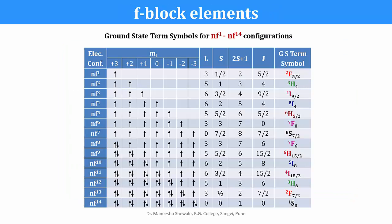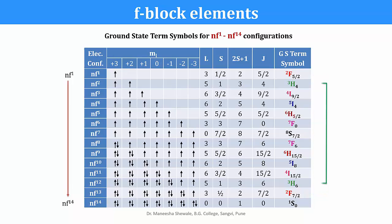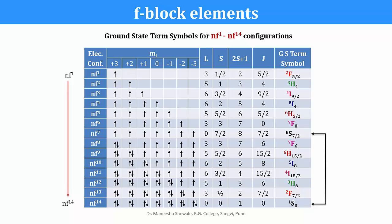A table depicts the ground state term symbols for NF1 through NF14 configurations, showing the electron filling and resulting term symbol. The patterns show NF1 and NF13, NF2 and NF12, NF3 and NF11, NF4 and NF10, NF5 and NF9, NF6 and NF8 share similarities, while the half-filled and completely filled orbitals have the S term as the ground state.